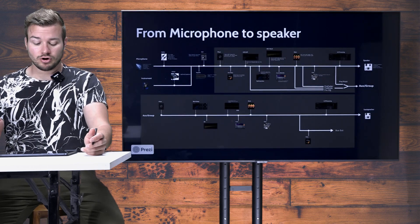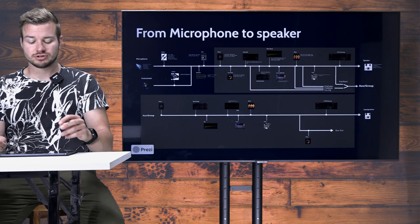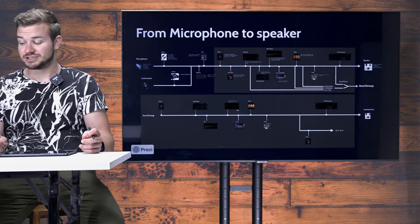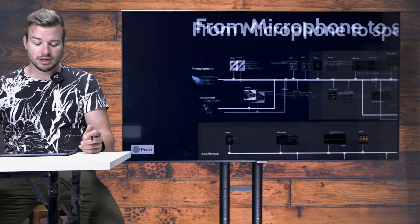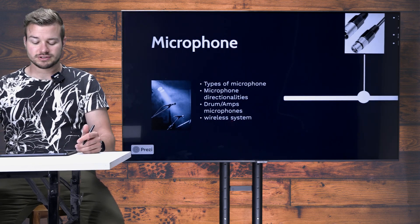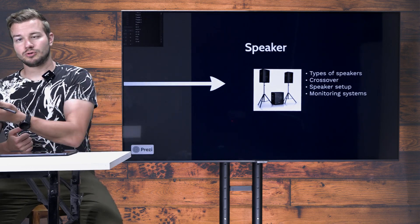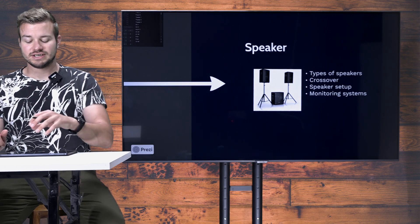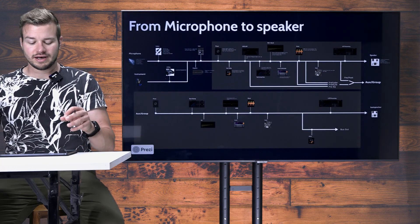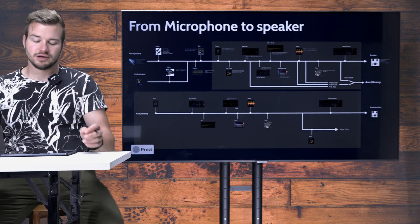Let's now walk together through the whole signal chain. All six videos I just mentioned are somewhere part of the signal chain, and whenever a topic pops up I will mention it again. We will start at the microphone — this is where the source of the signal is, though it could also be an instrument — and then we'll follow the signal all the way through the signal chain until it reaches the speaker. I will explain step by step what is happening from microphone to speaker.